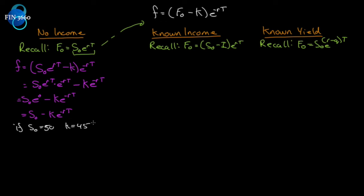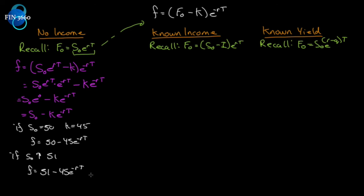...the value of the contract is 50 minus 45 discounted back to the point in time we observe the $50. Now if S₀ rises to $51, the value equals $51 minus 45 times e^(-rT). Notice the second term is a constant — the only thing that changes is the spot price. Therefore, the value of a forward contract increases by exactly the change in the spot price: spot up a dollar, contract value up a dollar.